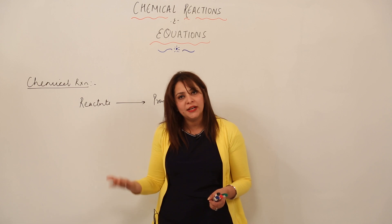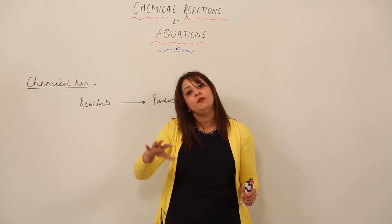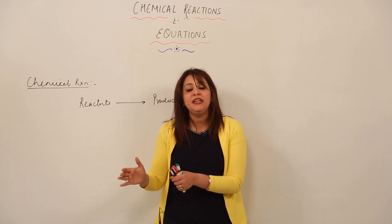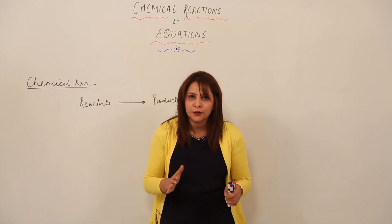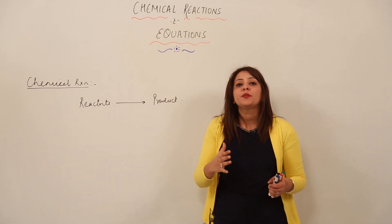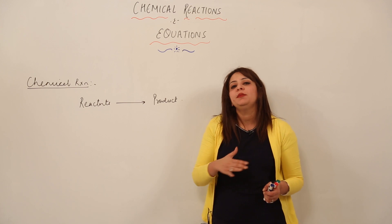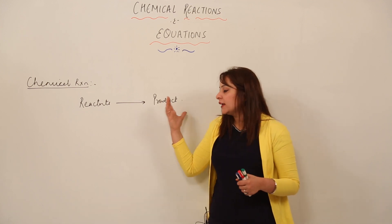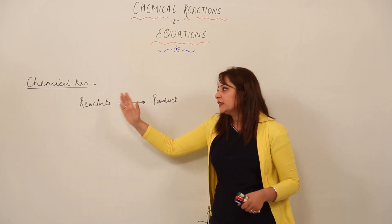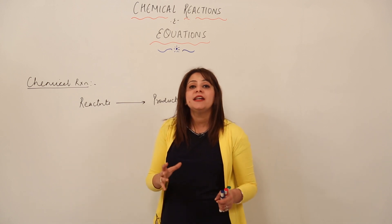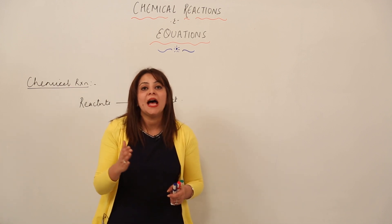How many reactants can you have in a chemical reaction? It is not limited — you can have one reactant or more than one reactant; there is no strict limit. Likewise, the product formed can be one or more than one. The number of products depends upon the chemical reaction. So a chemical reaction is simply a process in which substances undergo a chemical change to form a new substance called the product.